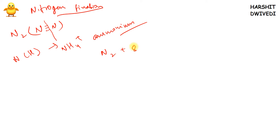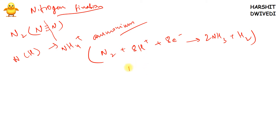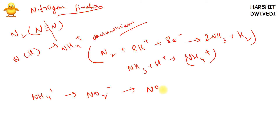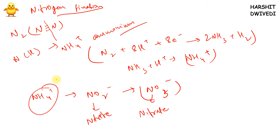The equation is: N2 plus 8 hydrogen ions plus 8 electrons leads to the formation of 2NH3. NH3 is ammonia, and hydrogen gas is the byproduct. When this NH3 combines with one H⁺ ion it leads to the formation of NH4⁺, which is the ammonium ion. In later stages, NH4⁺ gets converted into nitrite (NO2⁻), which further gets converted into nitrate (NO3⁻). This conversion is the nitrification process, which will be discussed in a subsequent video.